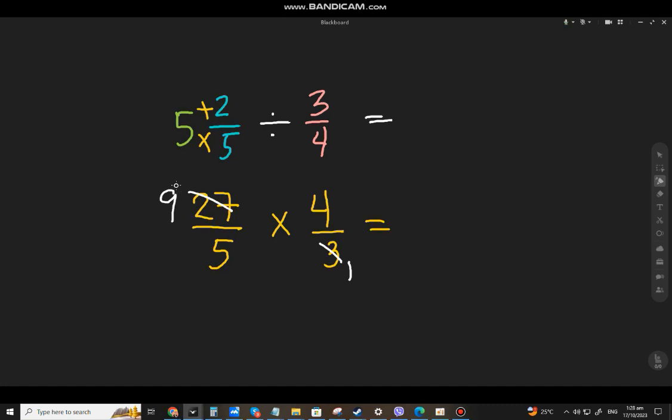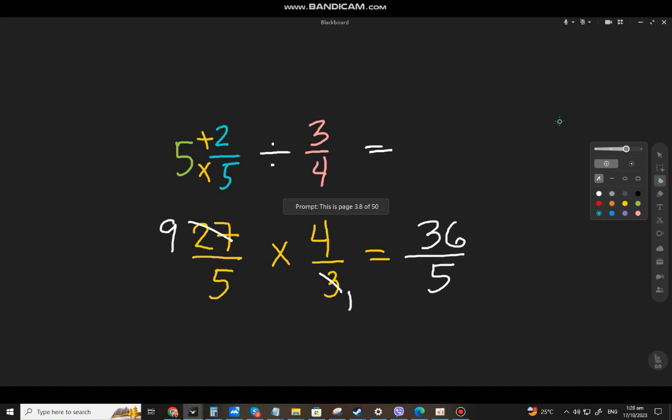We can now multiply. 9 times 4, that will be 36. And 5 times 1, that will be 5. Now let's also change that to a mixed number, 36 divided by 5.